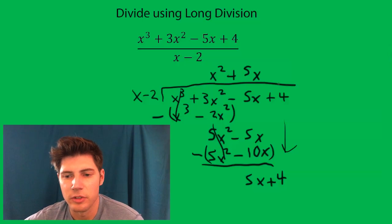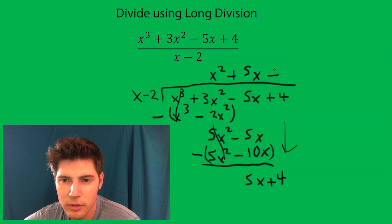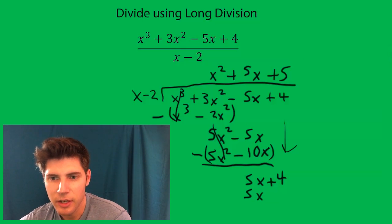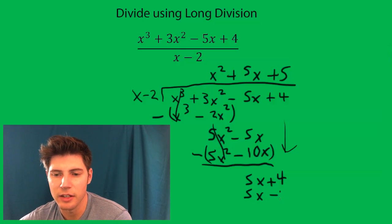Now how many times does this go into here? Well it goes in 5 times. So 5 times x is 5x and 5 times negative 2 is negative 10.